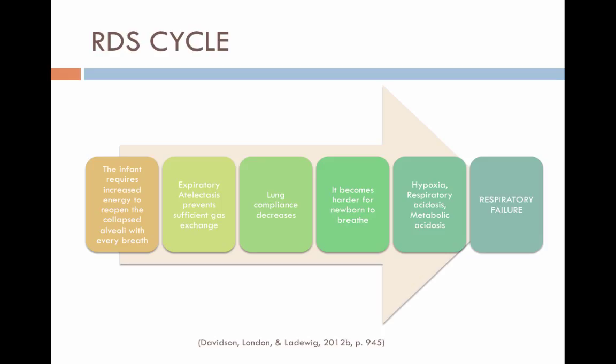So if the alveoli have collapsed or haven't even opened on the first breath, the infant will require excess energy to reopen the collapsed alveoli with every breath. Expiratory atelectasis prevents sufficient gas exchange, decreasing lung compliance, and making it harder for the newborn to breathe.